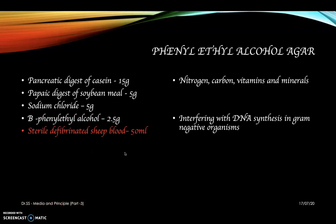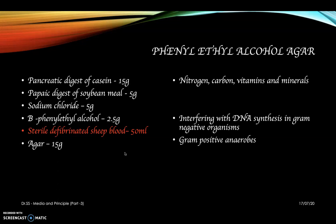Sterile defibrinated sheep blood is optional and can be added — it permits the growth of gram-positive anaerobic organisms. Agar is included, and the pH is 7.5 plus or minus 0.2 at 25 degrees Celsius.